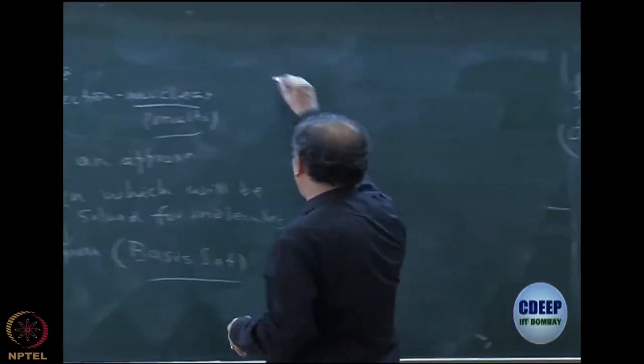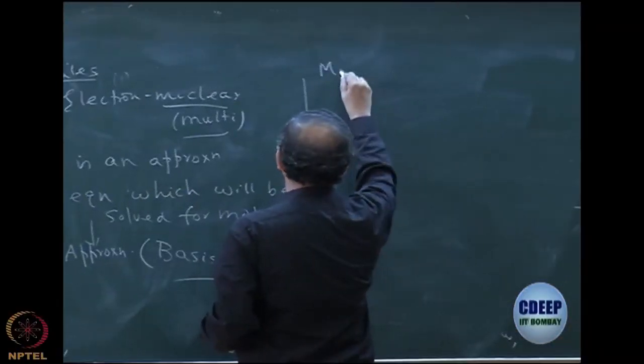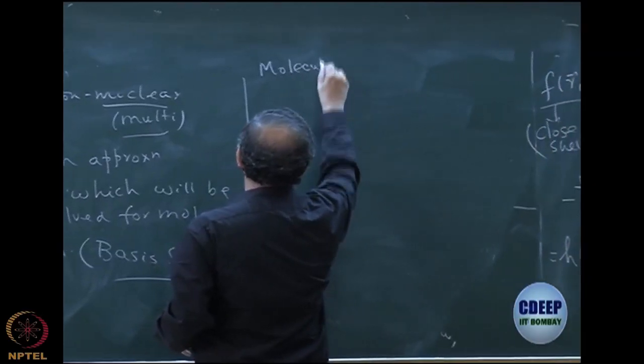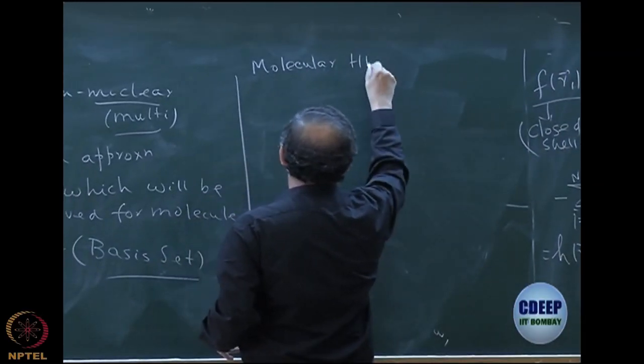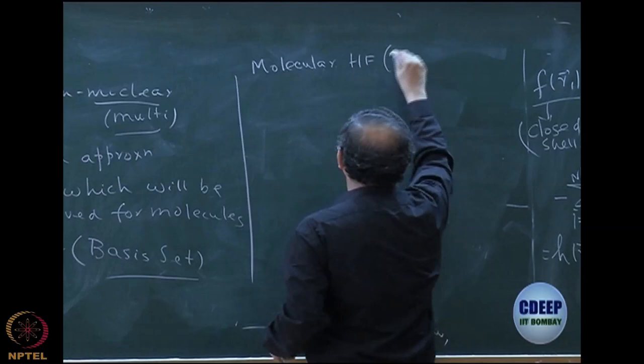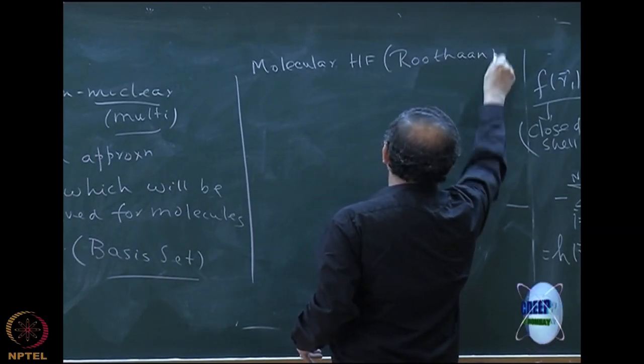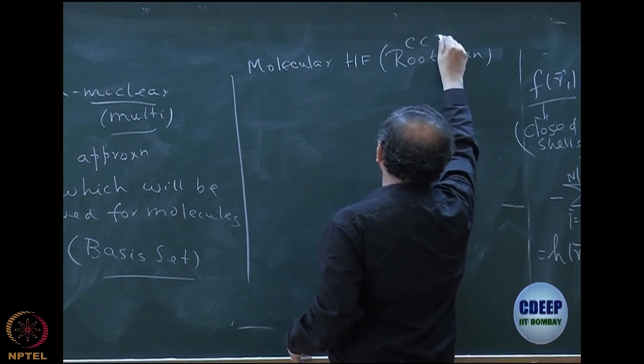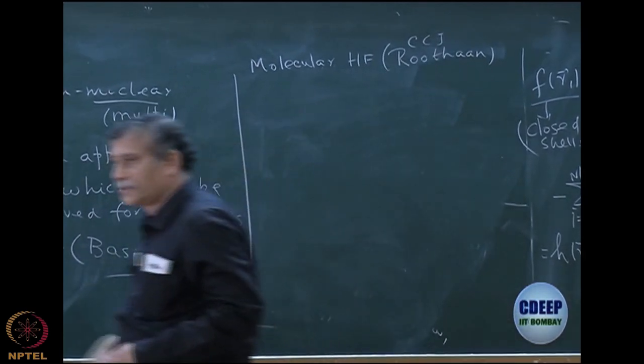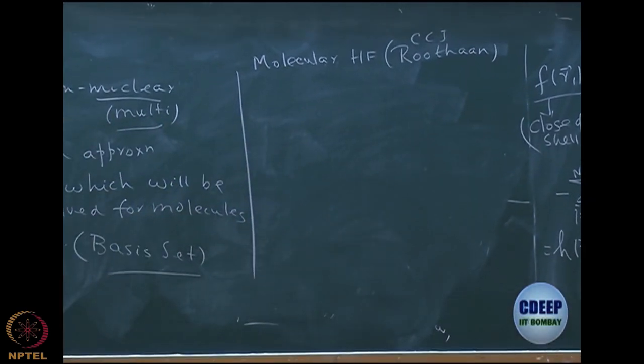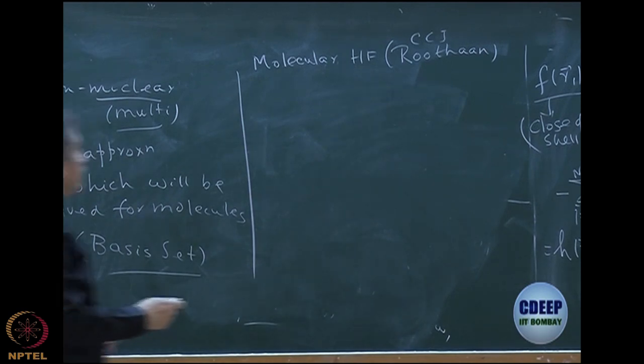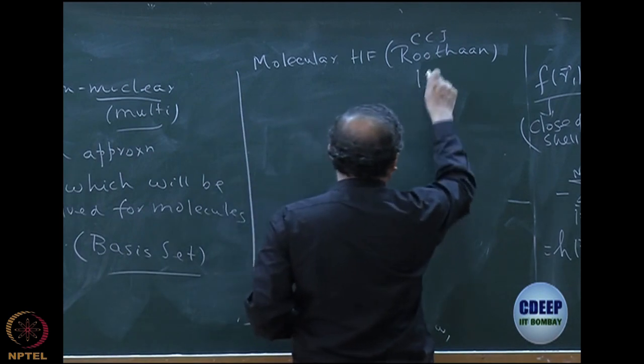This was actually done for molecular Hartree-Fock, and was done by Clemens Roothaan. He is known as C.C.J. Roothaan. The first C is Clemens. It is a very famous paper, and with him there is also work by Hall.